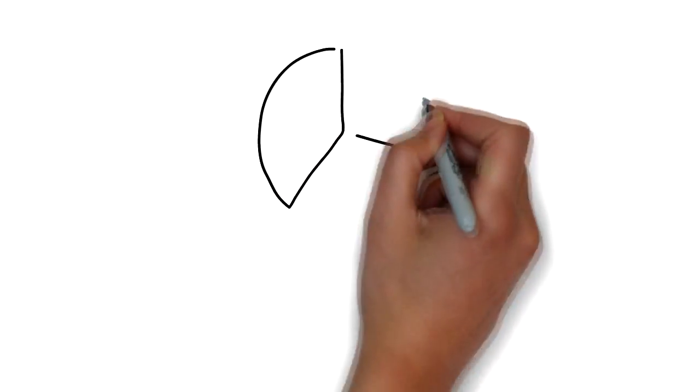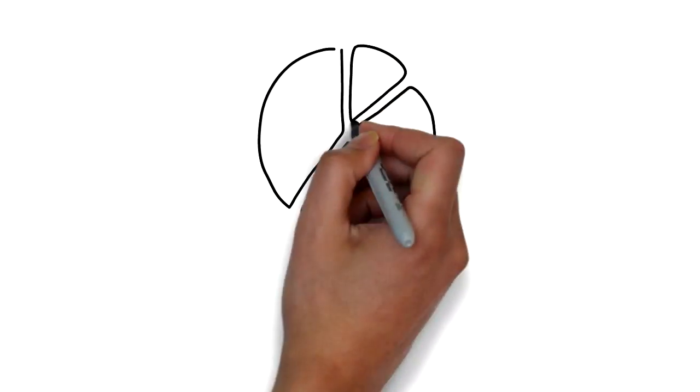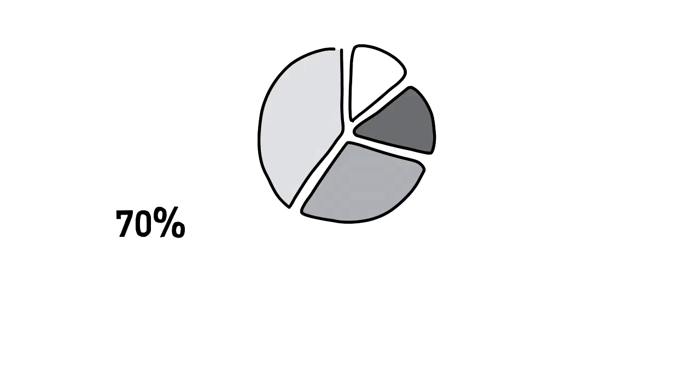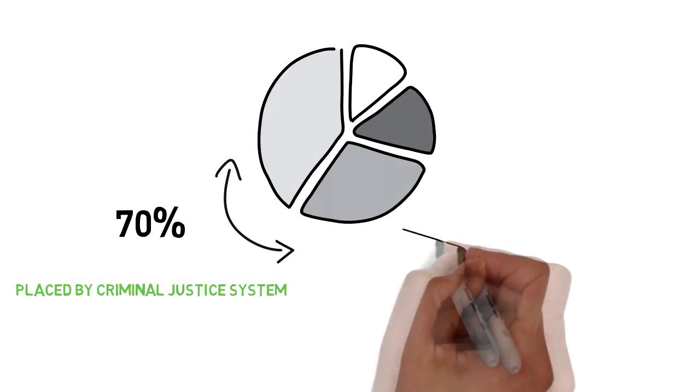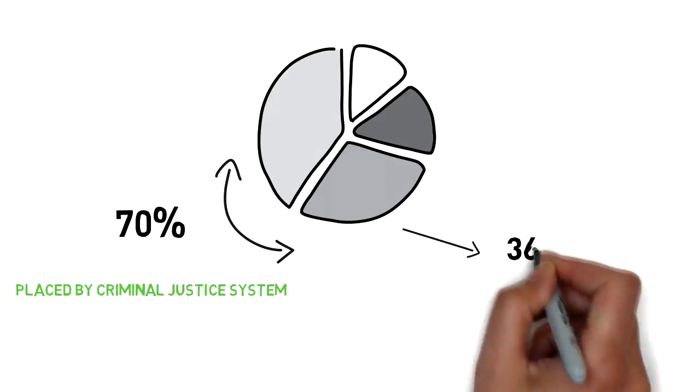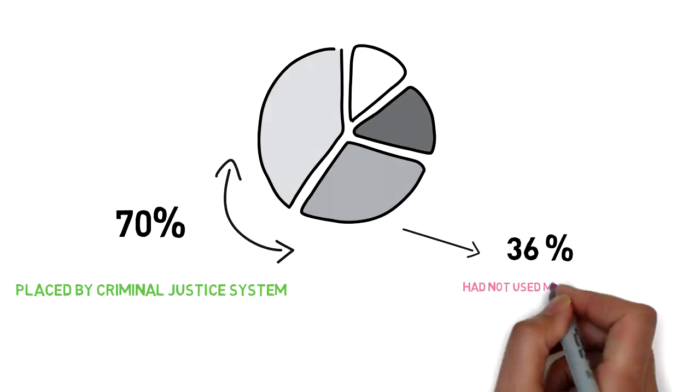According to the state and national statistics, up to 70% of individuals in drug treatment for marijuana are placed there by the criminal justice system. That number is entirely due to the adverse of the drug court sentencing minor pot offenders to rehab in lieu of jail time.